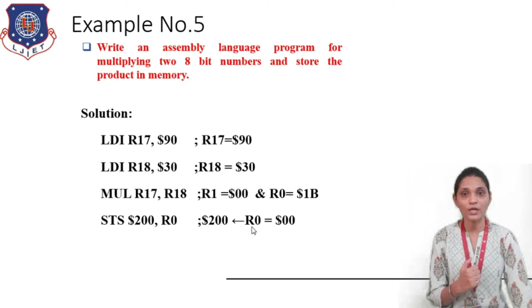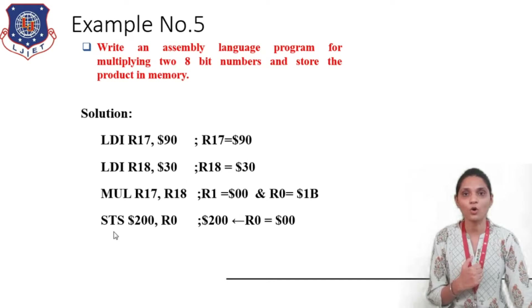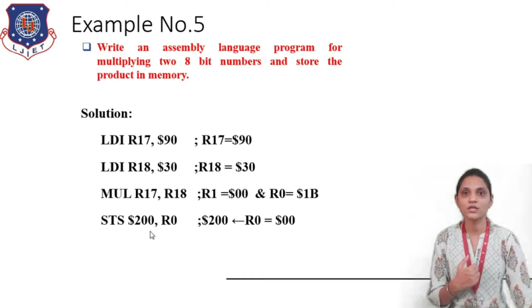Then we said that we have to store this result inside some memory location. So we have to use the instruction STS, which will store the content to some location. For this we need the opcode, then the address where you want to store the data, and then the register whose content you want to store in that memory location. So we have to store the contents of registers R0 and R1, and we are randomly choosing locations 200 and 201.